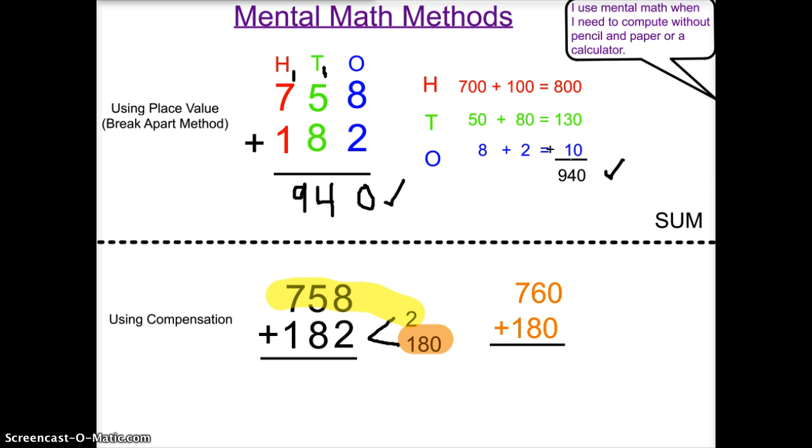0 plus 0 is 0. 6 plus 8 is 14. I would put down a 4 and regroup a 1. But in my head, no need to regroup. 7 plus 1 plus 1 is 9. So I have a sum of 940.